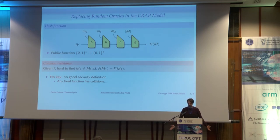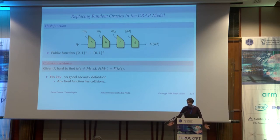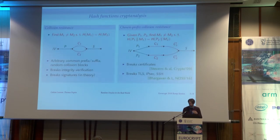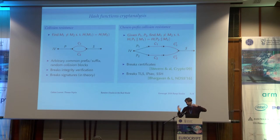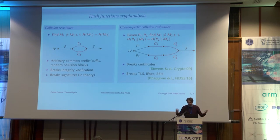But in fact, if you don't have a key or a nonce, this doesn't exist. Any fixed function has collisions. So this crapt model is really poor — you cannot even do a random oracle model well. There are different kinds of collision resistance: the normal one is just finding two messages that collide. In most cases this doesn't really break concrete stuff, because it's not powerful enough — you cannot really control what the collisions look like.